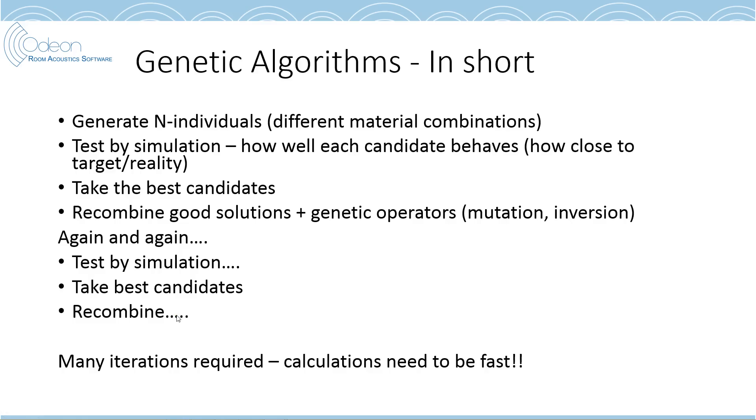So, the genetic algorithms. What is this all about? A genetic algorithm is, as suggested by the name, inspired by genetics. So what you do is you have a number of individuals, which in our case is the combination of absorption materials that are given of octave band. And you have this combination which mimics all the materials in the room. Then, you test by simulation how well each of these candidates behave, these candidate solutions, how close do we come to the target of reality.